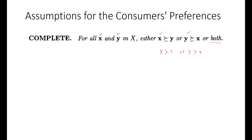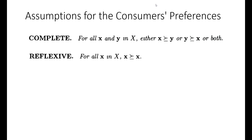The second assumption is reflexiveness. By reflexiveness we mean that for all x — and x is not a single bundle, it can be x1, x2, x3, and so on — these are many bundles that belong to the consumption set. x is at least as preferable as x.